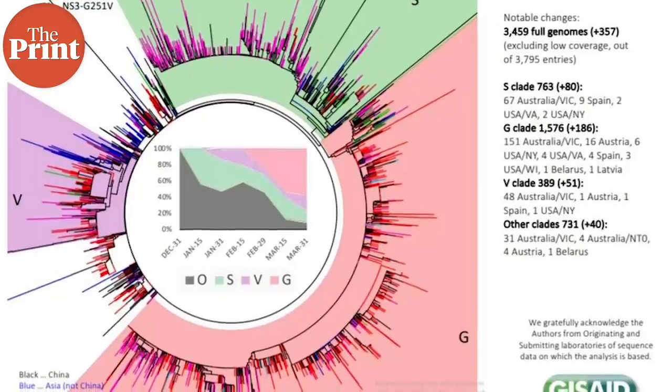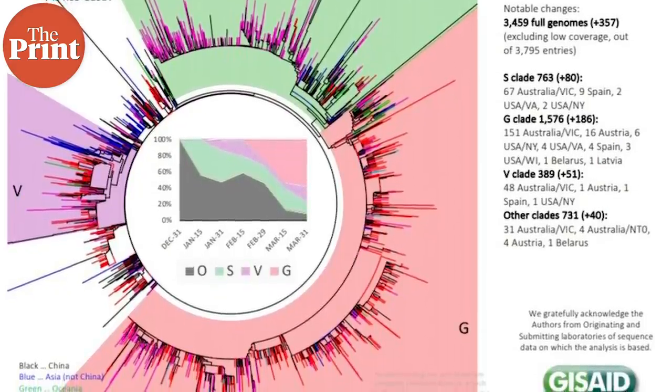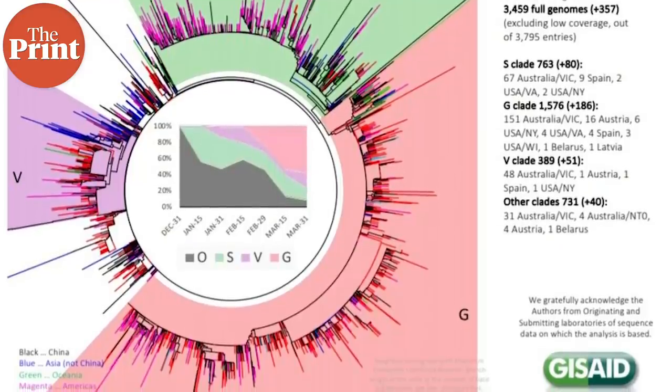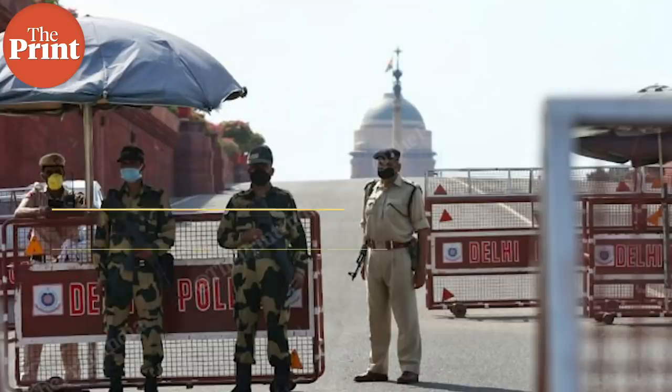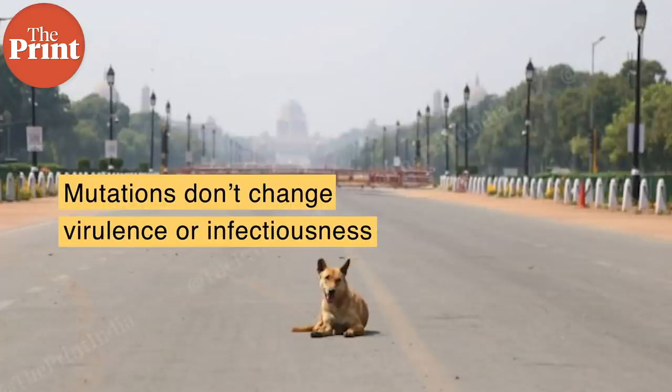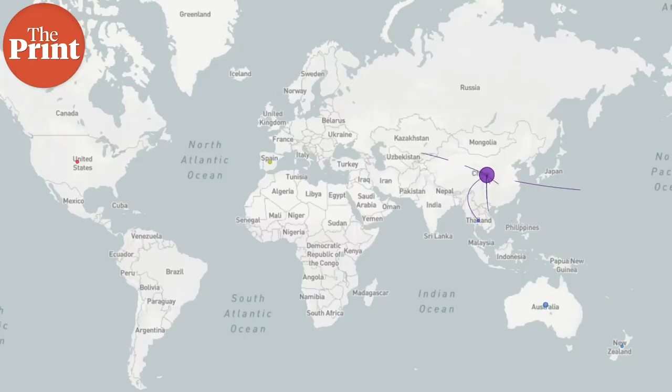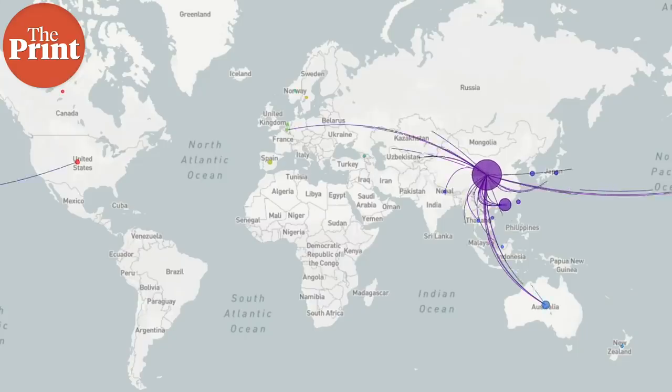The L-type was not inherently better at spreading than the S-type. It turns out the geographic variation and variation in spread was only because of human interventions and restrictions on travel. Whichever type was able to move on to other countries in the early days of the pandemic, with fewer public health interventions, spread rapidly in new countries and then mutated there.